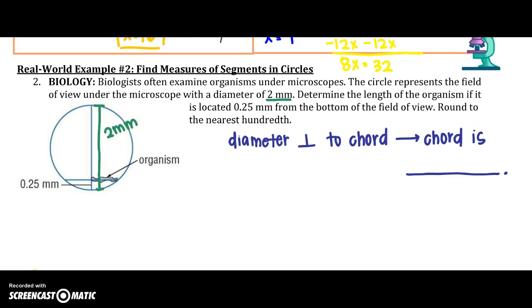So, this entire thing here is 2 millimeters, which we would also know that this portion, because my organism is located 0.25. I'm going to take 2 minus 0.25 to give me 1.75. And that represents this segment right here. Alright, and because if a diameter is perpendicular to a chord, the chord is also, to remember, it is bisected.